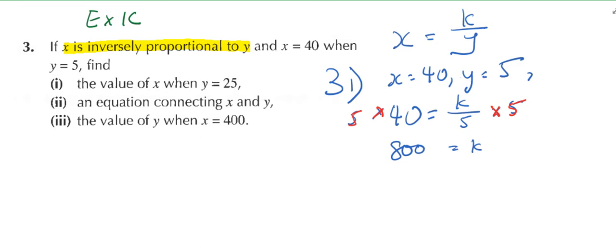Wait, wrong. K equals what? 200. So step number three is you need to rewrite the equation. How do you rewrite the equation? X equals 200 over Y. Do you know this is the answer for part two?